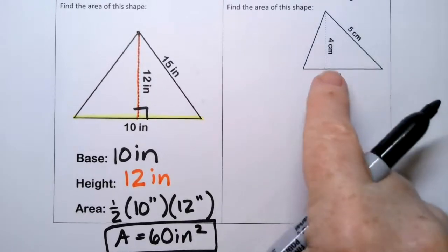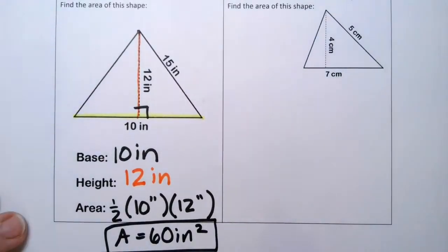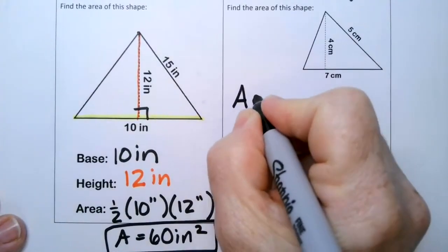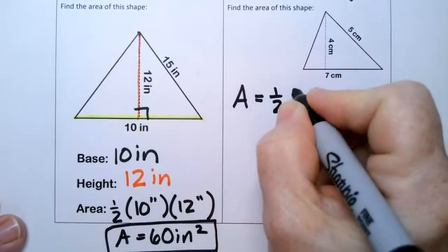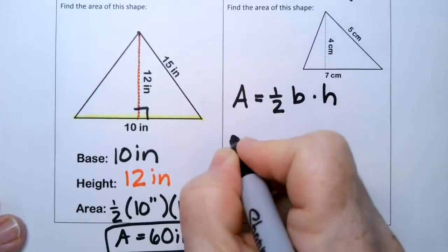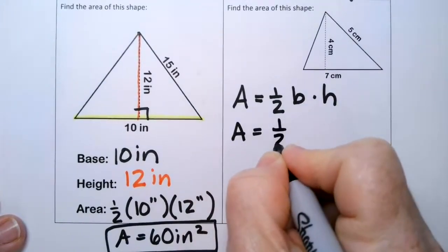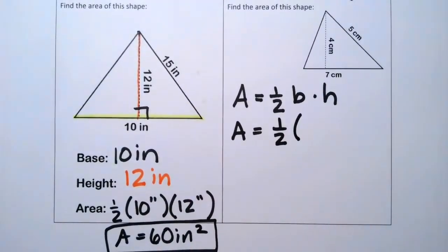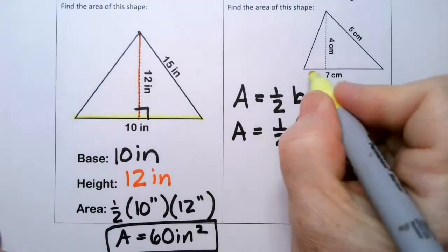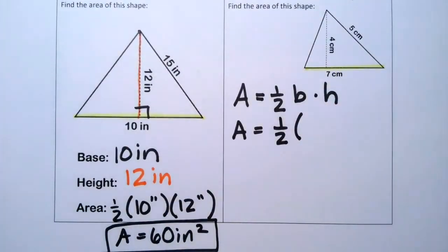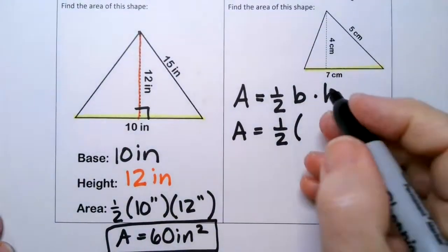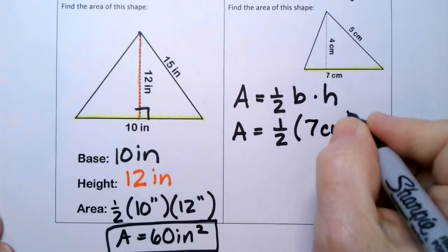Okay. So now let's find the area of this shape. Okay. You tell me what is the base and what is the height while I write this down. Which one's the base? The base is going to be that one right there. So we're going to write 7 centimeters.